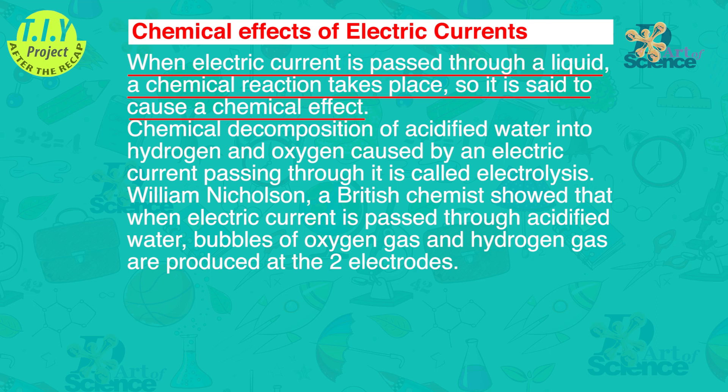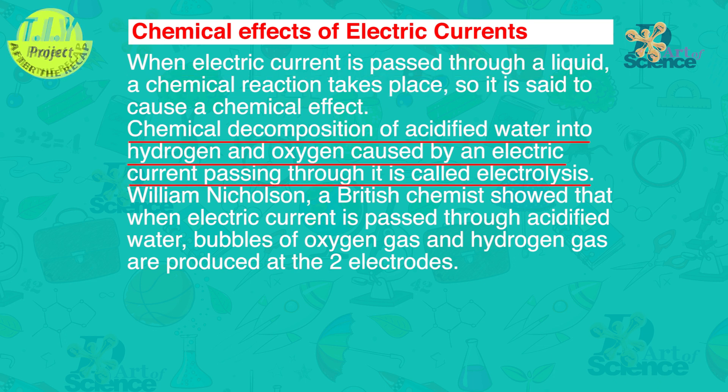Now let's do a recap before we move on to the TIY of the lesson. When electric current is passed through a liquid, a chemical reaction takes place. So it's said to have a chemical effect. Chemical decomposition of acidified water into hydrogen and oxygen caused by an electric current passing through it is called electrolysis.